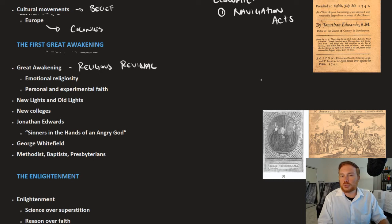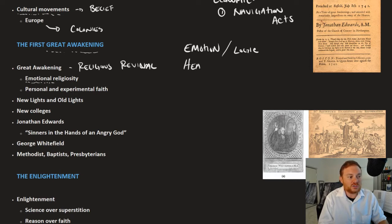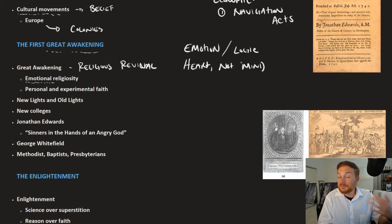What the Great Awakening seeks to do as a movement is to preach a different type of religion. Rather than it being academic, rather than it being very formal and educated, the Great Awakening is all about emotion. A good way of thinking about the Great Awakening is emotion over logic. Another good way of thinking about it is that religion becomes a matter of the heart, not the mind. It's more about personal and experimental faith rather than learned and educated faith. This was a new approach to religion that a lot of ministers were taking, and this swept through not just Europe but also swept through the 13 colonies.